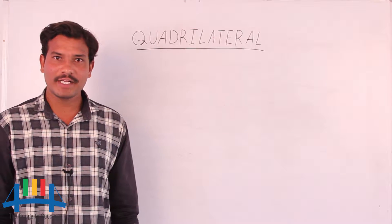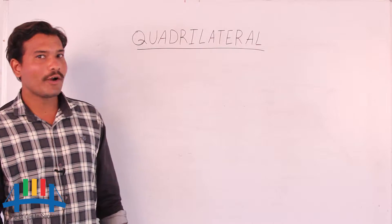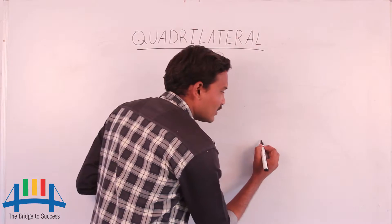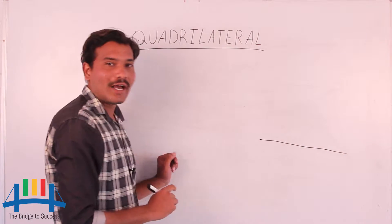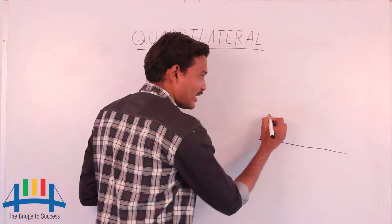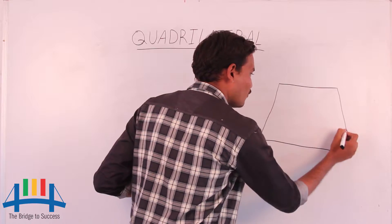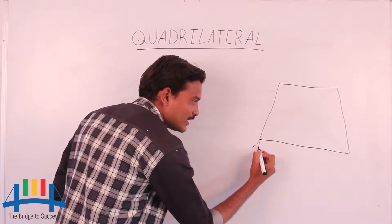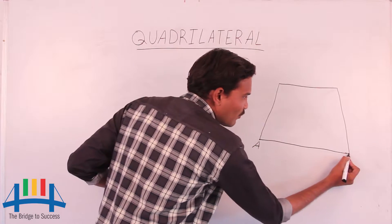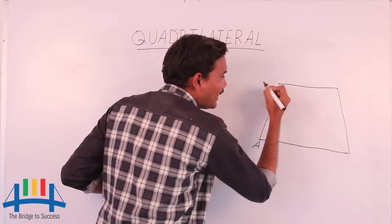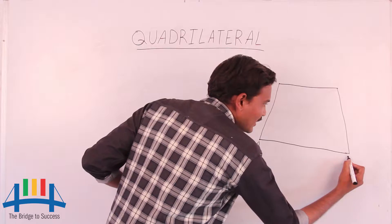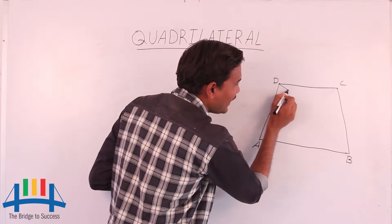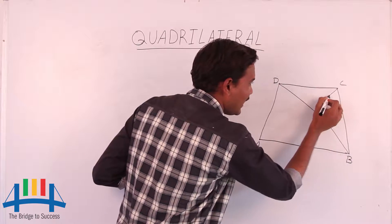Today we will discuss quadrilaterals. A quadrilateral is a simple closed figure bounded by four line segments. Here we have four line segments, and the four meeting points — the vertices — are labeled A, B, C, and D. In a quadrilateral we also have diagonals: BD is one diagonal and CA is another diagonal.